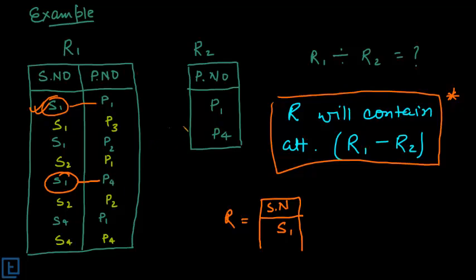Now let's check for S2. S2 corresponds to P1 here. To be included in the result, S2 should correspond to P4 also. So if we see S2, S2 doesn't correspond to P4, so S2 will not be in our result. So this is something which we cannot include.